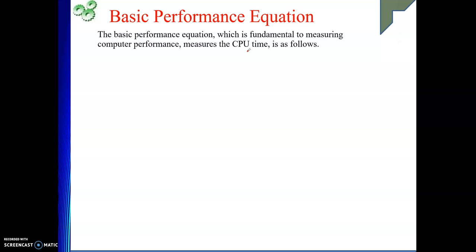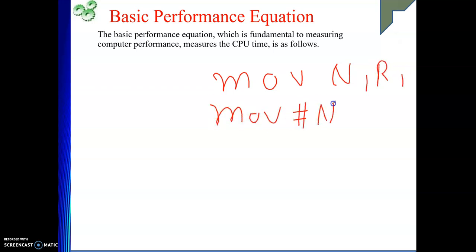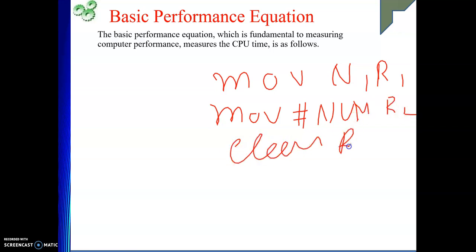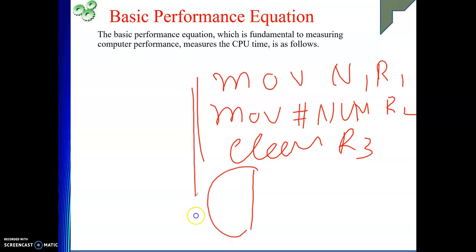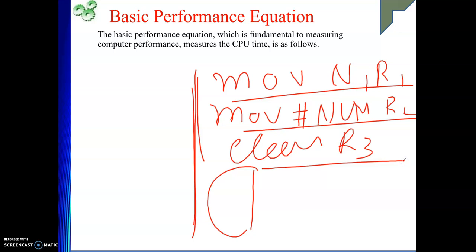We have seen some examples of assembly language programs till now. For example, to add N numbers: Move N comma R1, Move has_num comma R2, then Clear R3 for storing the results. This type of thing we have seen, then some set of instructions executed in a loop. This comprises my program. My program comprises a set of instructions — each one is an individual instruction, and when this complete set of instructions is termed as a program.